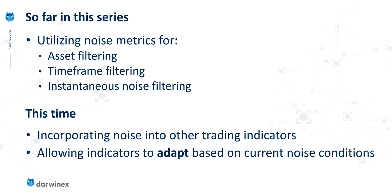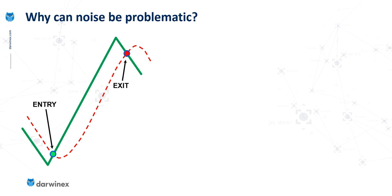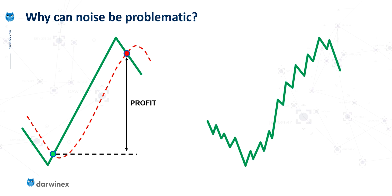Let's take a look at the specific problem that this is trying to address. Let's say that the green conceptual price action here is the meaningful price move that we're attempting to capture. We might choose to use a moving average to tell us when the trend is changing — for example, when the price crosses the moving average in an upwards direction, we could enter a long trade, and when it crosses in the opposite direction, that's where we exit. Under ideal conditions, that's fairly easy to do and we can turn a fairly good profit. However, in real life, there's noise to contend with, and the effect of noise is that it causes whipsaws around that moving average crossover.